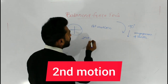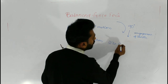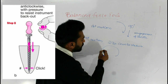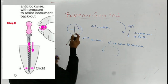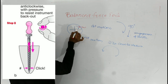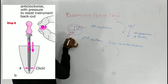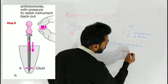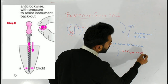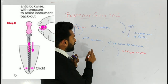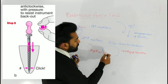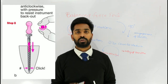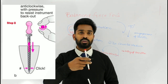The second motion includes 270 degrees counterclockwise. This causes the cutting of the engaged dentine from the first part. While doing it counterclockwise, you need to maintain the apical pressure. By keeping the file at the desired length and maintaining the apical pressure, give a 270 degrees counterclockwise — otherwise, the file pulls out from the canal.